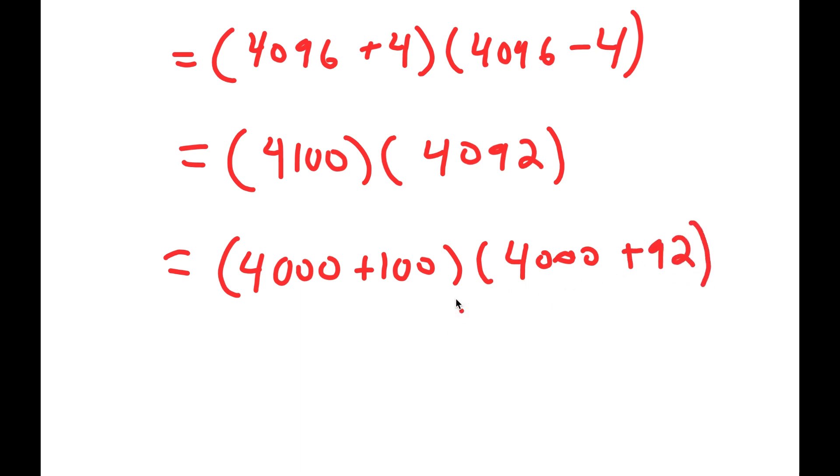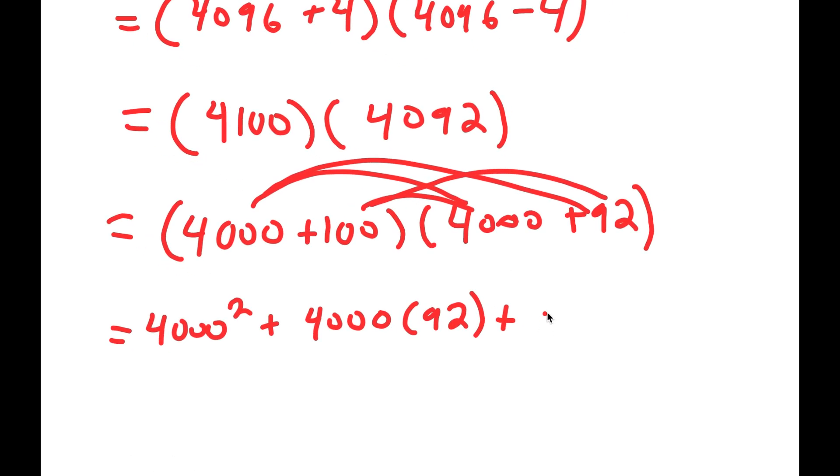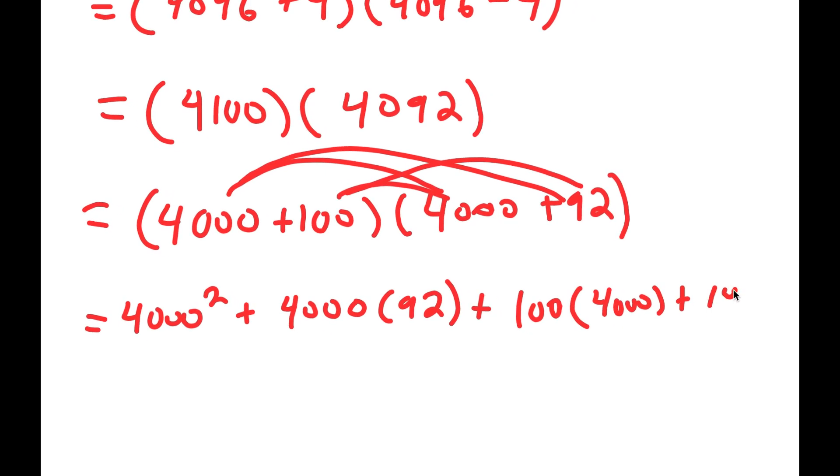Now, the reason I did this is because now I can distribute. So I'm going to distribute 4000 first. 4000 times 4000 is 4000 squared. Now, 4000 times 92. And now I have this plus, I can distribute the 100. So I have 100 times 4000 plus 100 times 92.